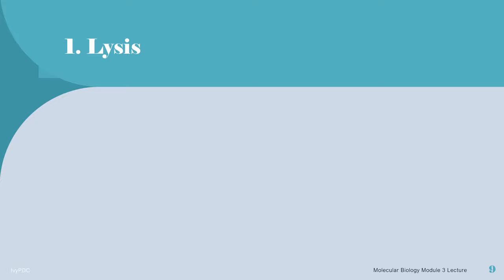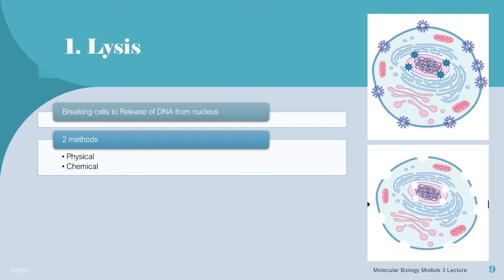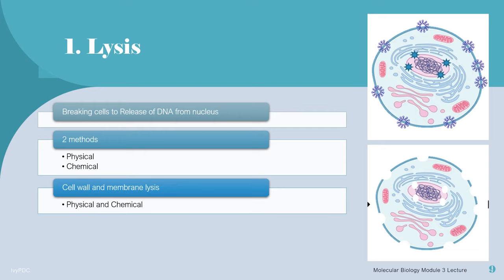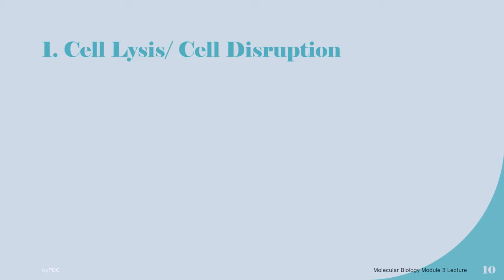The first step in DNA extraction is lysis. In this step, the nuclear membrane, the cell membrane, and the cell wall of the cells are broken up to release the DNA. There are two methods of doing this: physical or chemical. To break open the cell wall and the cell membrane, we can use both or either physical and chemical methods. But when it comes to nuclear membrane lysis, we mostly use chemical methods. The lysis step is also commonly referred to as cell disruption or cell lysis, since we are breaking open the cell to expose the DNA from within.